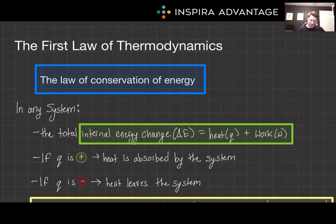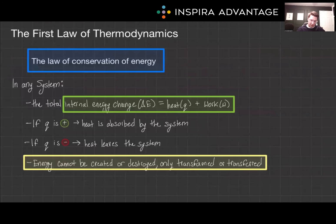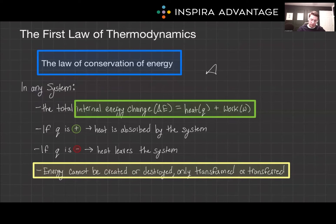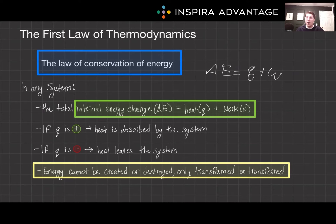Now let's move on to the first law of thermodynamics. The first law gets at the law of conservation of energy. In any system, the total internal energy change, delta E, is the sum of the heat, little q, added to the system and the work done on it. Therefore, delta E equals q plus w. If heat is absorbed by the system, q will be positive; if the system cools, q is negative. Similarly, w is positive when work is done on the system and negative when work is done by the system.